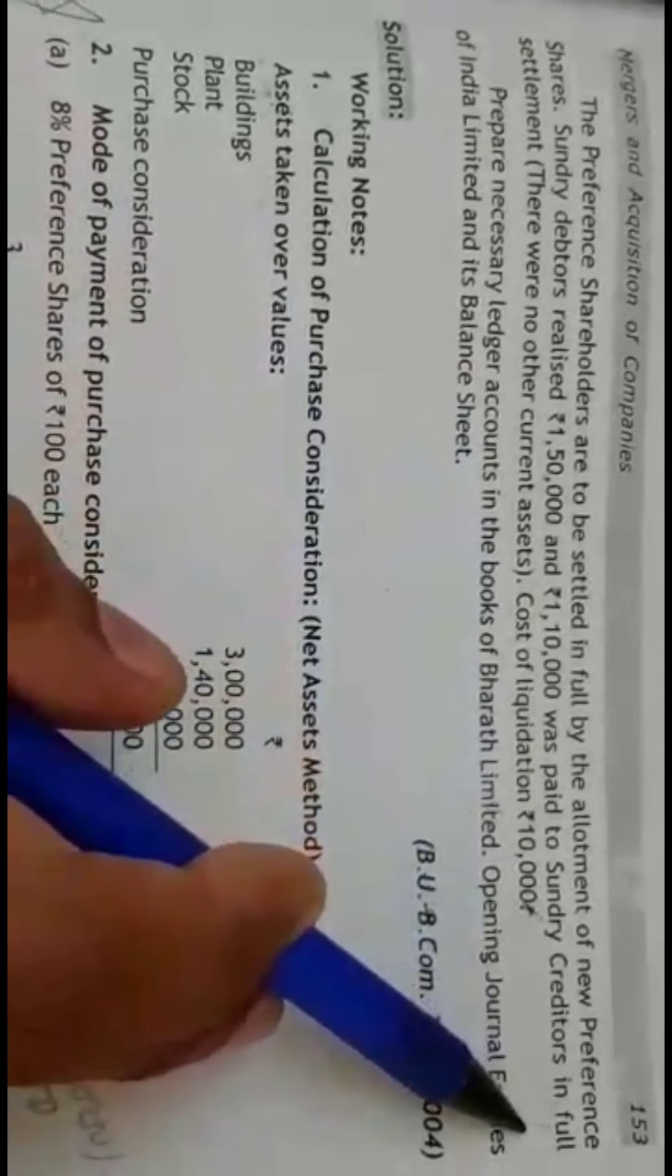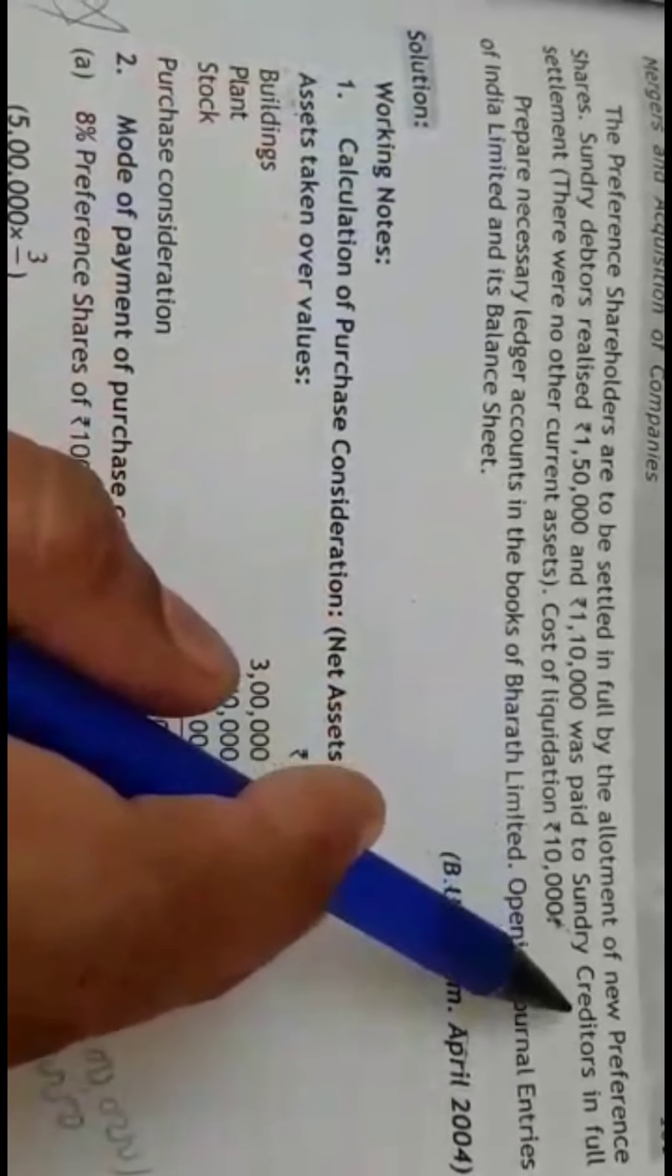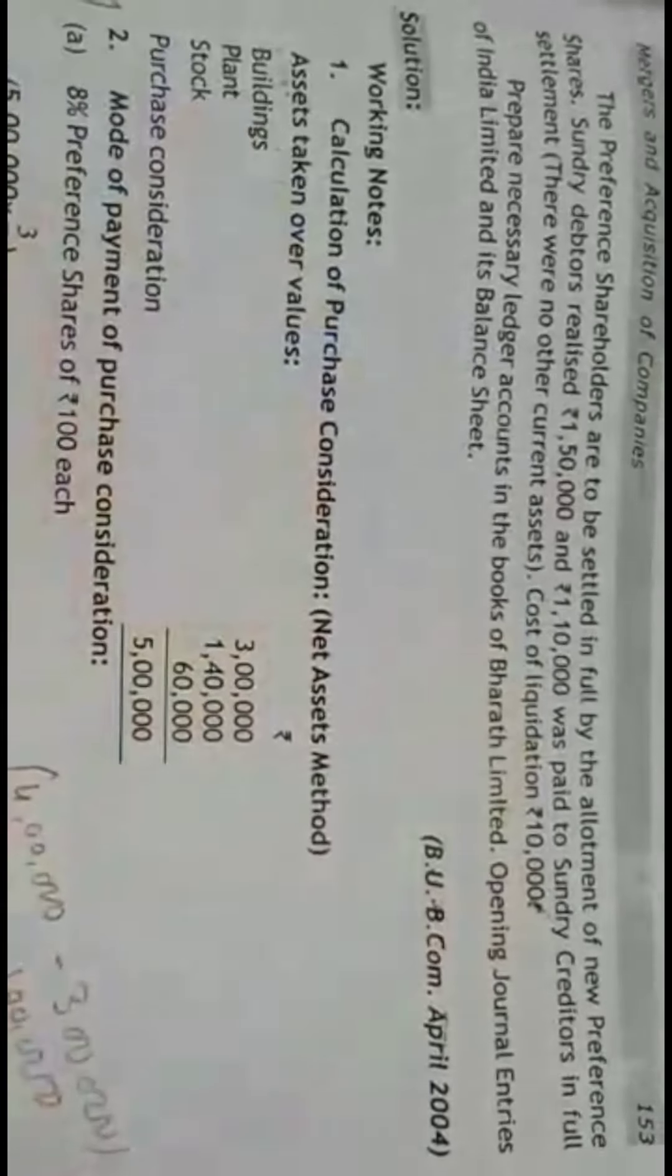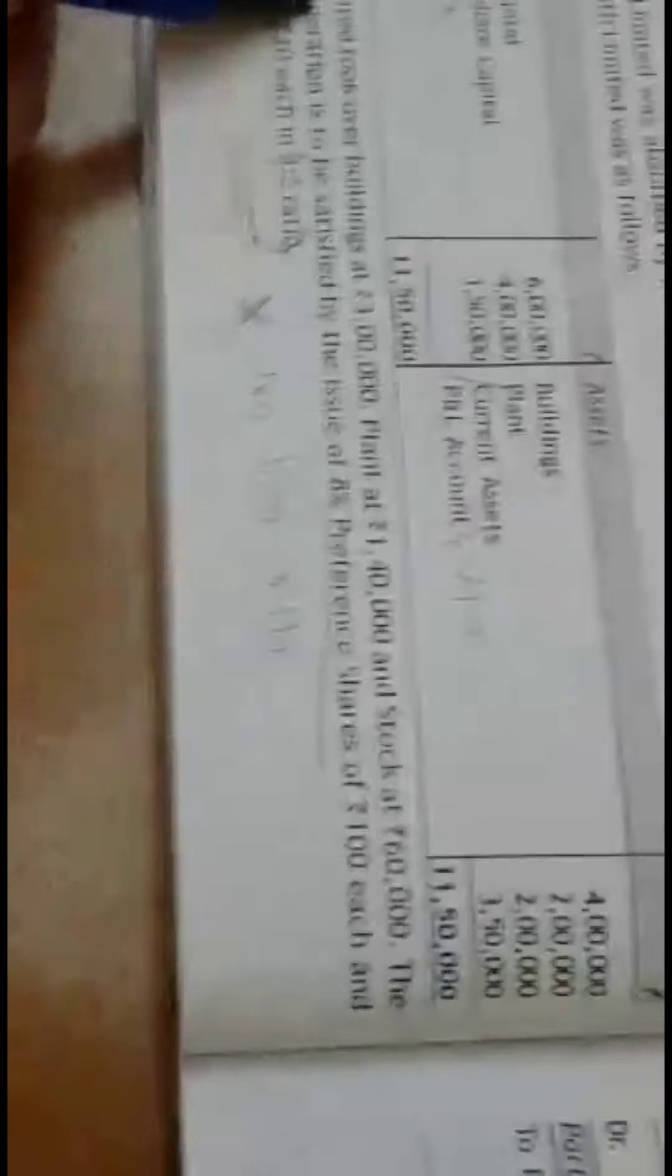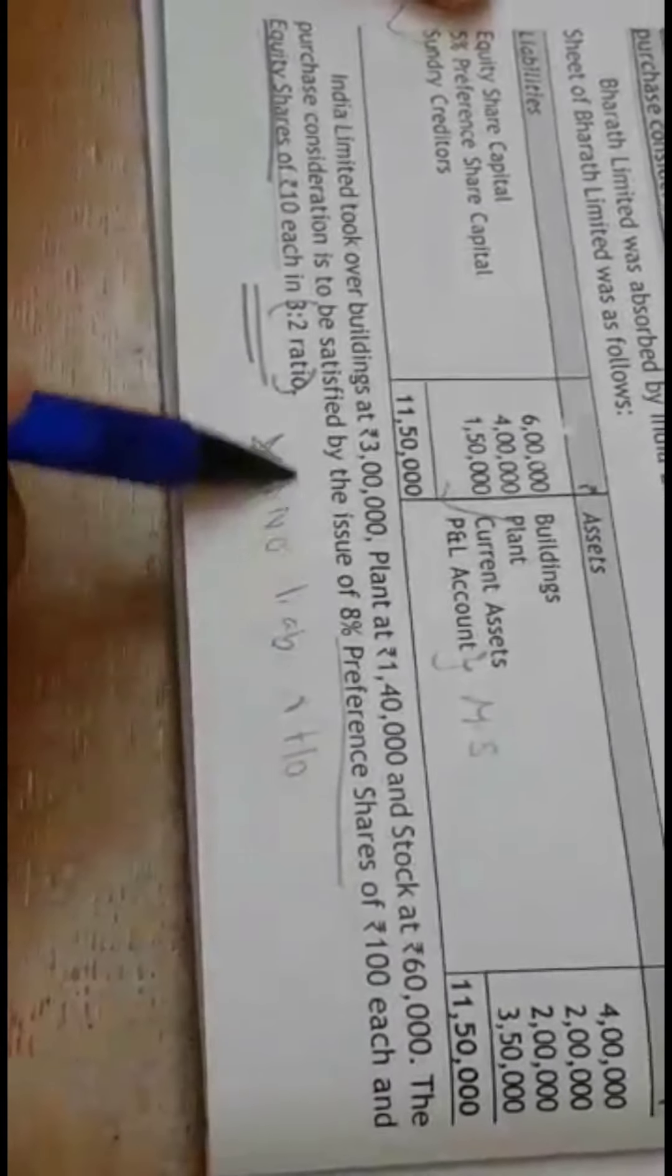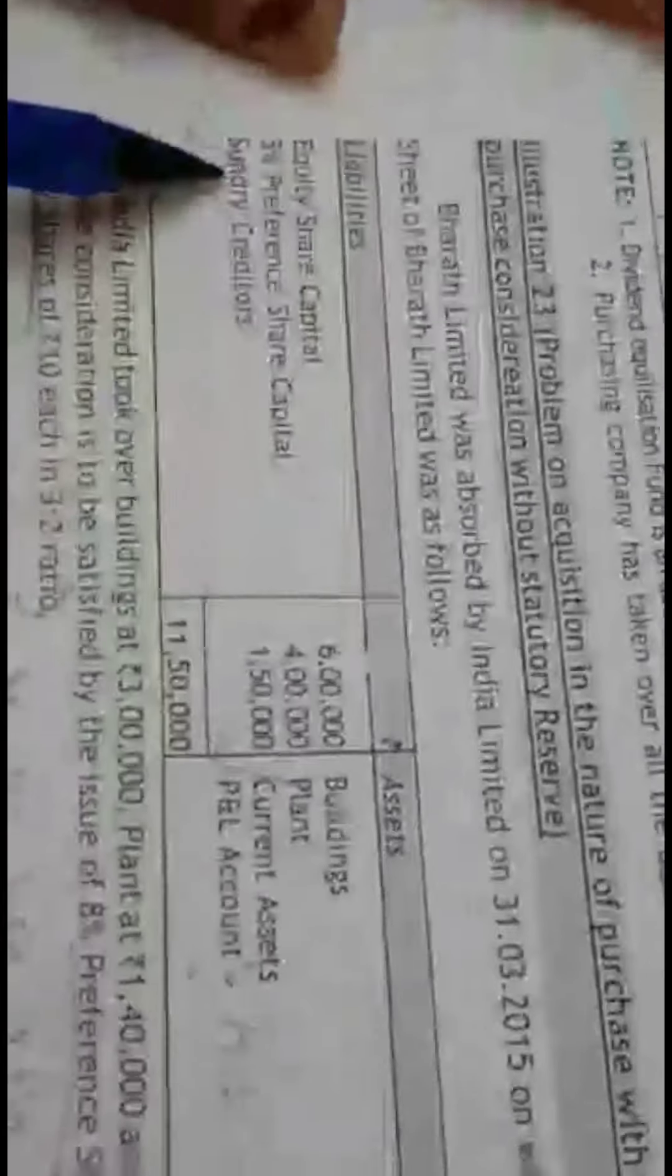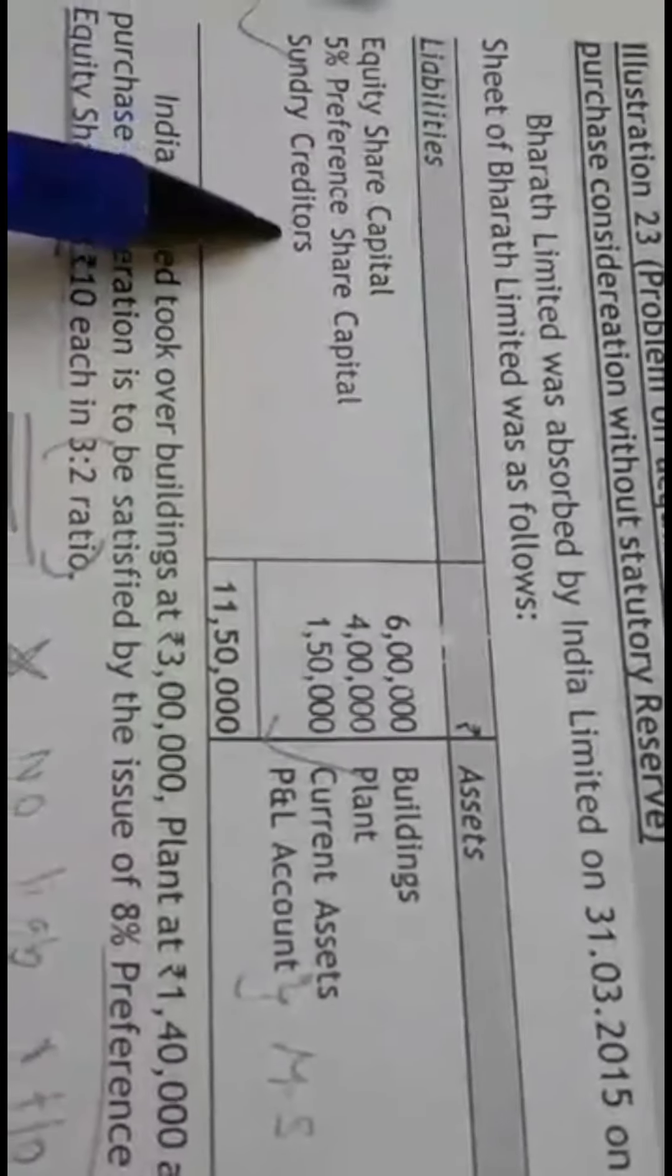Sundry debtors realized Rs. 1,50,000 and Rs. 1,10,000 was paid to sundry creditors in full settlement. Which means that the creditors are not taken over here. As we have already discussed in the adjustment, they are taking over the assets but they are not mentioned anywhere about the liabilities taken over.